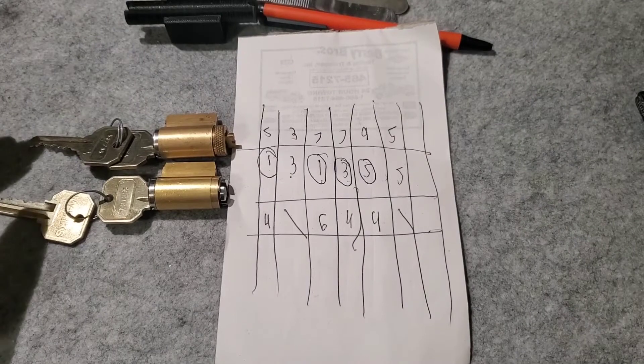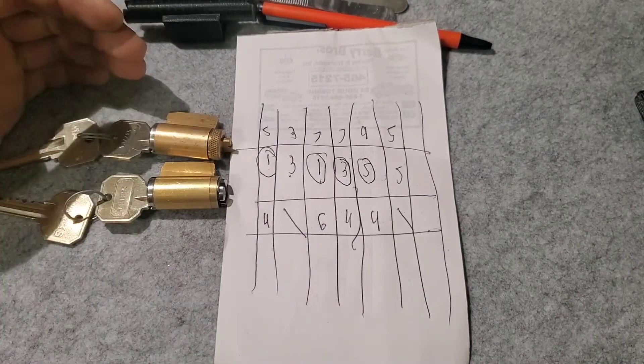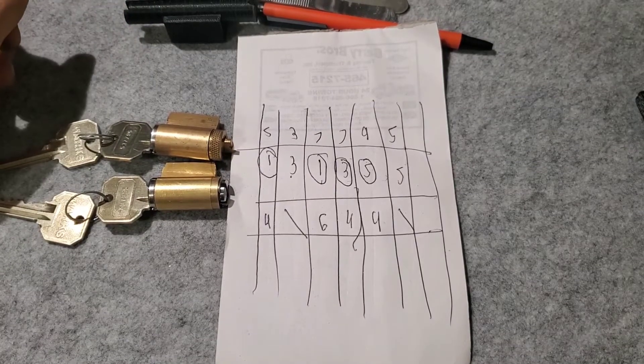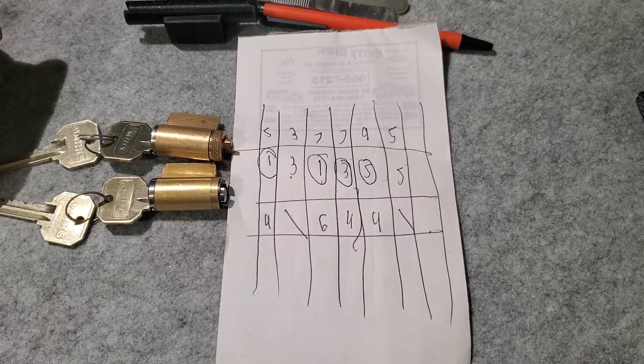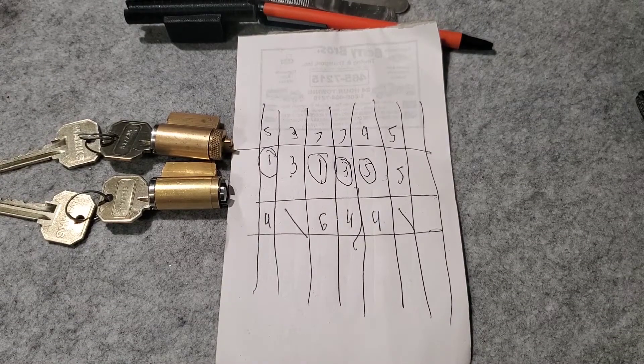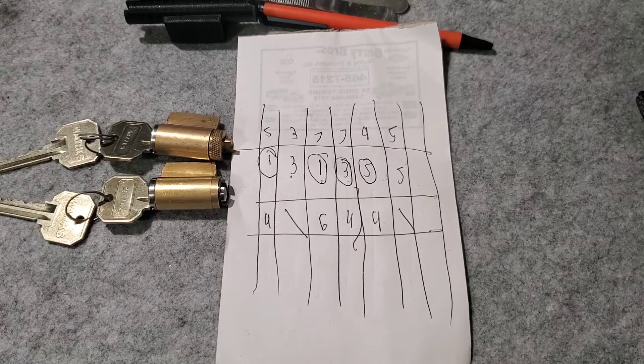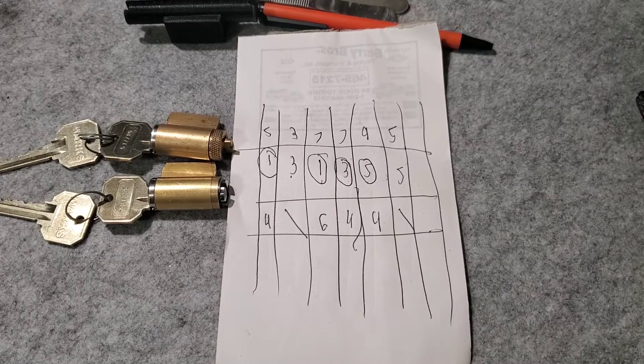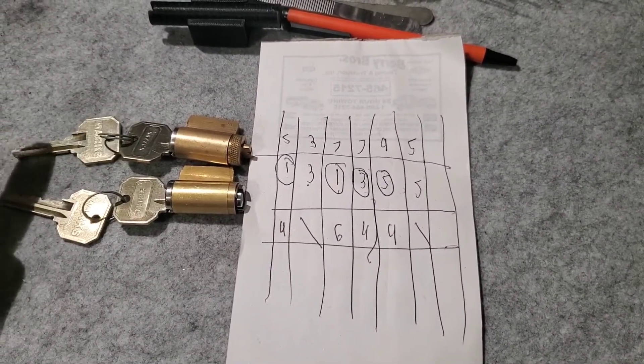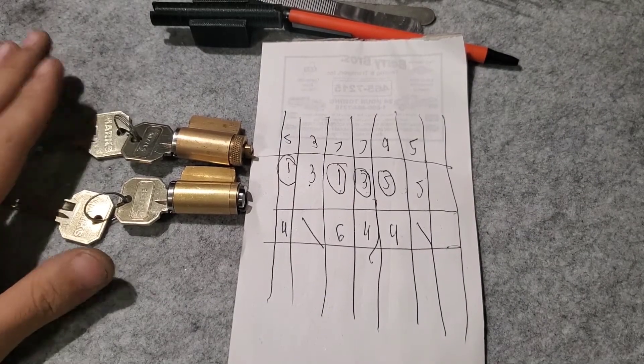Master keying is basically having one key operate multiple locks and there's different levels of master keying. Let's say you have a large facility, maybe even two buildings, and you only want certain people to have access to certain things. What do you do? You master key it.